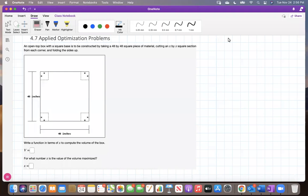An open top box with a square base is to be constructed by taking a 48 by 48 square piece of material, cutting an x by x square section from each corner and folding the sides up. Write a function in terms of x to compute the volume of the box. For what number x is the volume maximized? Solution here.